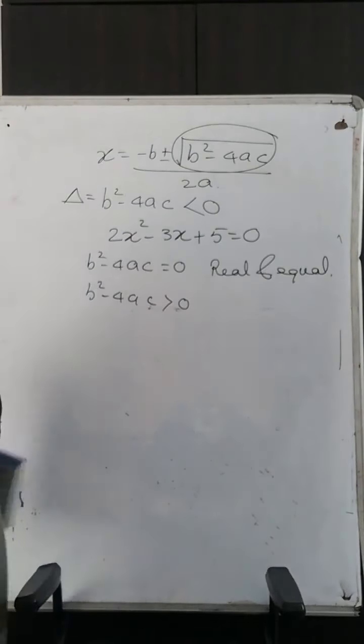Just find the value of B squared minus 4AC. If it is less than 0, no real roots exist. If it is equal to 0, the roots are real and equal. If it is greater than 0, the roots will be real and distinct.